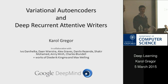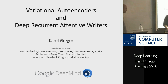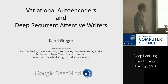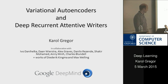Let's get started with our second speaker, also from Google DeepMind, Carol Brecker. I will talk about the recent developments in generative models that make them easy to train and make them scale and fit with neural networks. And then the very latest model, which we call Deep Recurrent Attentive Writer.